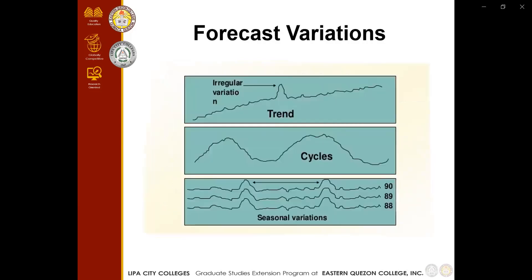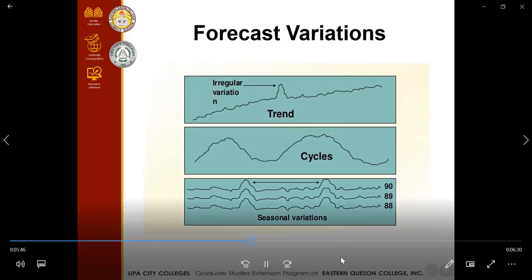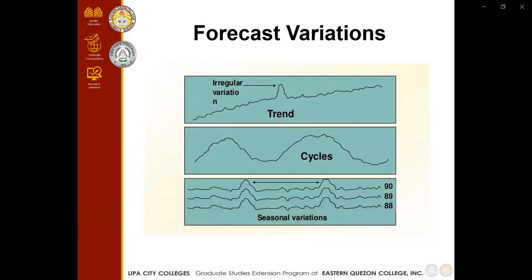Looking at the sample visual, we can observe the irregular variation showing a sudden spike in trend. The cycles show continuous wave-like patterns. The seasonal variation shows a notable rise early on — values of 90, 89, and 88 — representing our forecast.